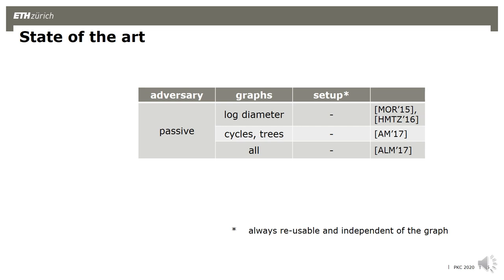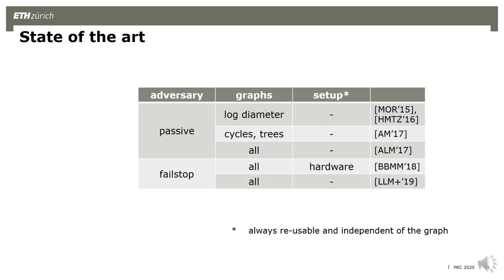The first four protocols consider passive adversaries. The first two are only efficient for graphs with small diameter; the third works for cycles and trees; and finally we have a protocol for all graphs. Then we look at more powerful adversaries, for example a fail-stop adversary who can crash parties, and here we have two protocols that both work for all graphs. The first one requires a hardware setup with secure hardware boxes.